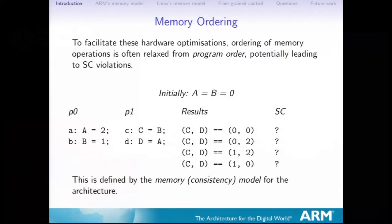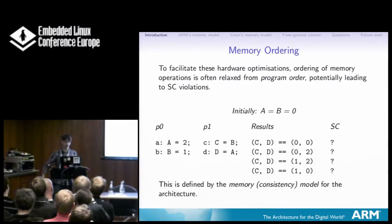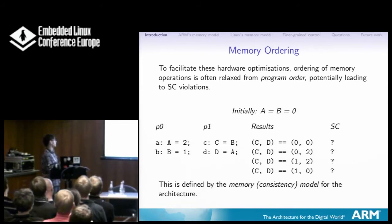All this was done to hide memory latency, because as you know, the processor is getting a lot faster than memory is. So what we do instead is define a memory consistency model for each architecture, which says: we're not quite sequentially consistent — or in some architectures, we're nowhere near sequentially consistent. Here's what we do: we define what we can do. We're basically relaxing things from program order.